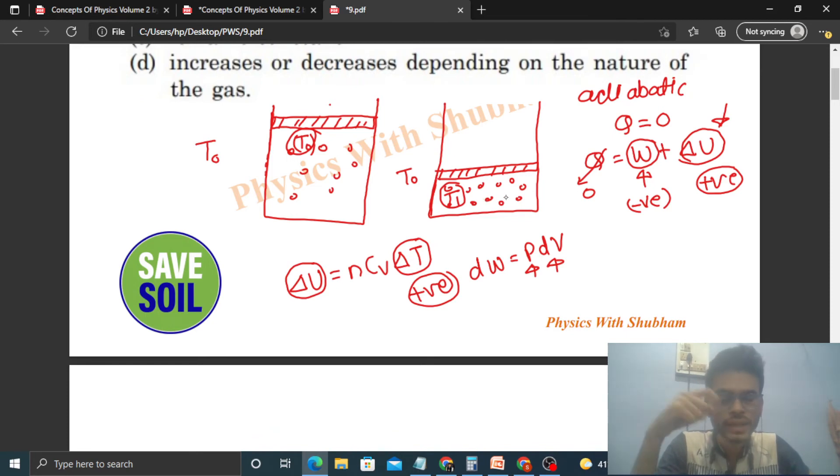From the gas to the surrounding, right, because the gas's temperature is higher. So we can say the gas's temperature will decrease from T₁ to T₀, right? So the pressure will also decrease. Why will the pressure decrease? Because you see, PV = nRT, right?